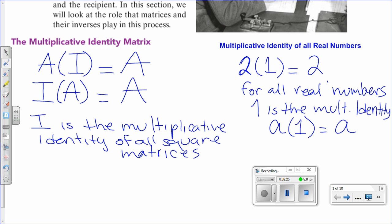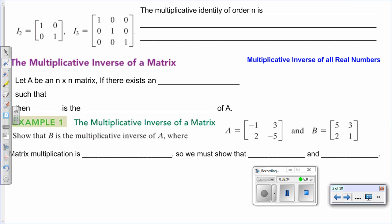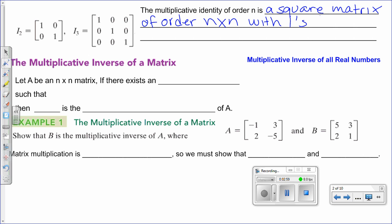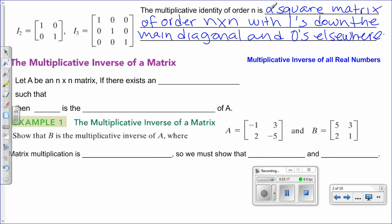Remember, when we say square, that means we have the same number of rows and columns. The multiplicative identity of order n is a square matrix of order n by n — with 1s down the main diagonal and 0s elsewhere. Here we have two clear examples: the identity of a 2x2 and the identity of a 3x3, with ones across the main diagonal and zeros everywhere else.